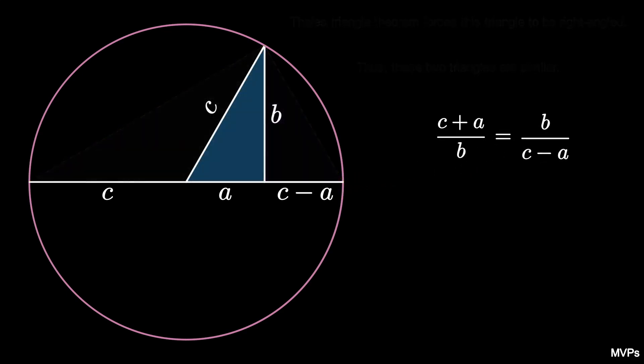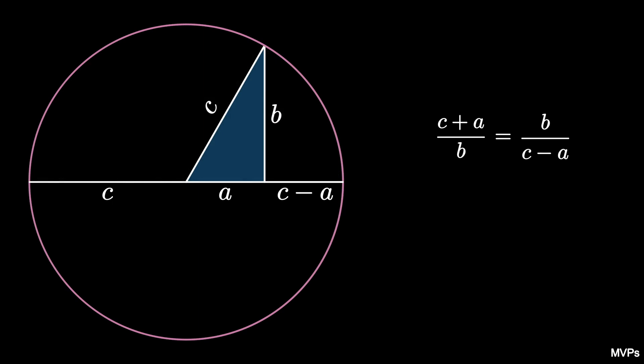In turn, this implies that (C + A) times (C - A) equals B squared. Expanding the product, we get C squared minus A squared equals B squared, so that C squared equals A squared plus B squared. This is the Pythagorean theorem.